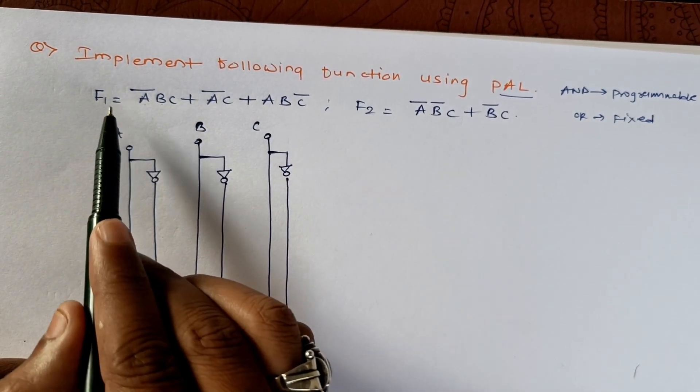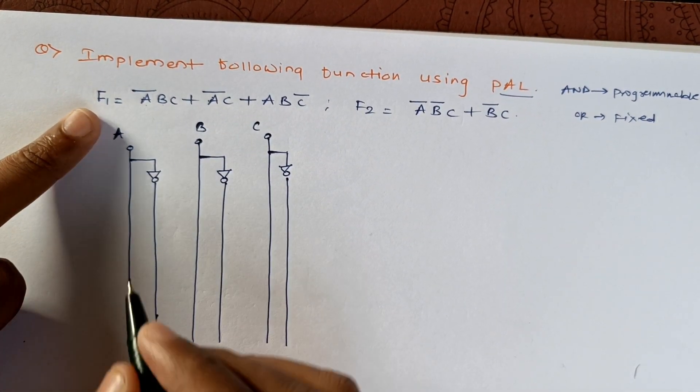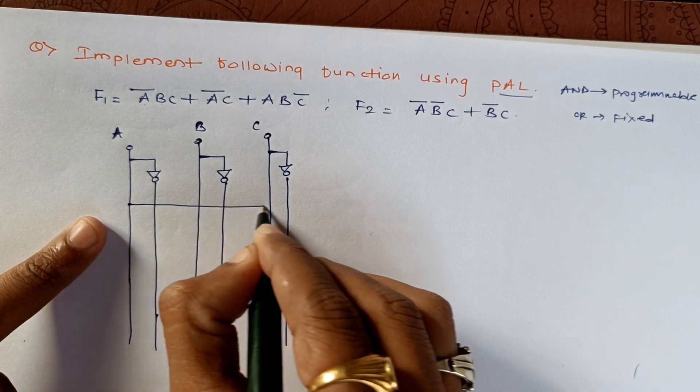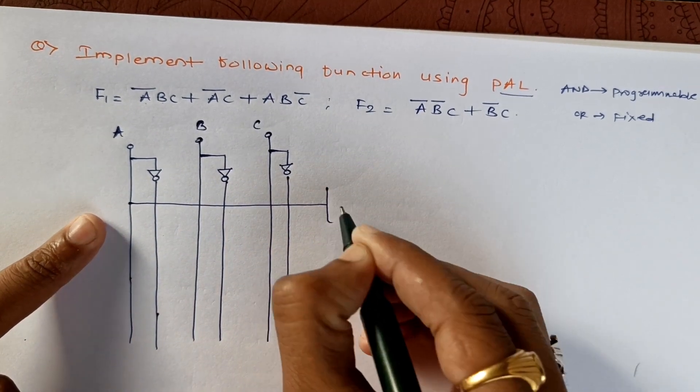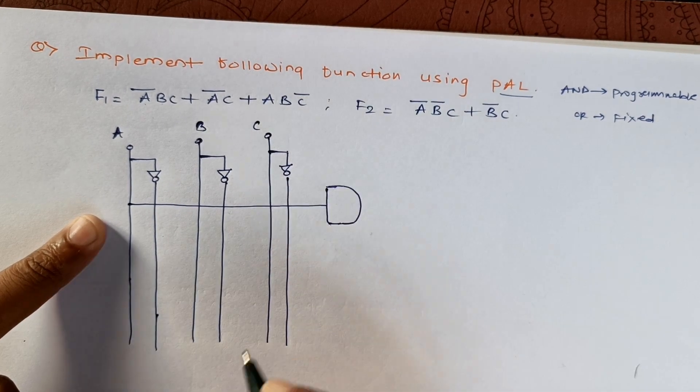Now let's start with the first function. First function is given as A bar times B times C, so I will be drawing one line here and we will use an AND gate.